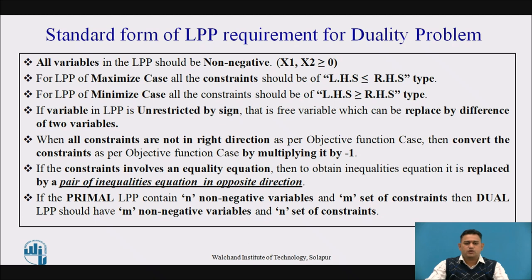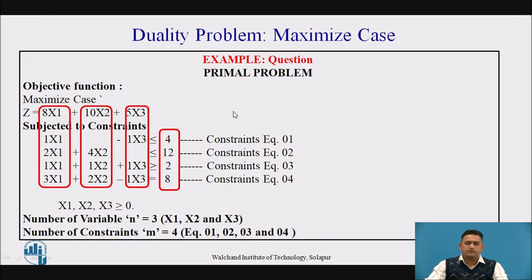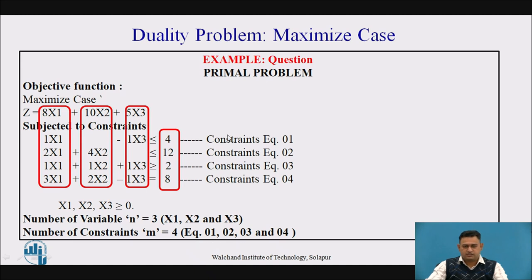Now let's see the standard forms of LPP required for the duality problem. Here is a problem of maximized case: z = 8x1 + 10x2 + 5x3, subjected to four constraints. The number of variables n is equal to 3, and the number of constraints m is equal to 4 — equations 1, 2, 3, and 4.